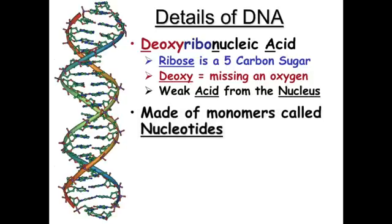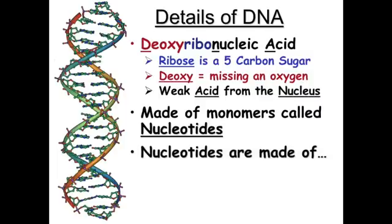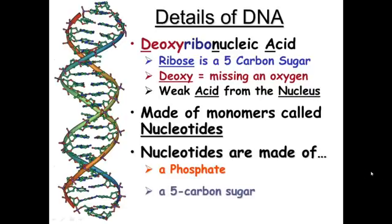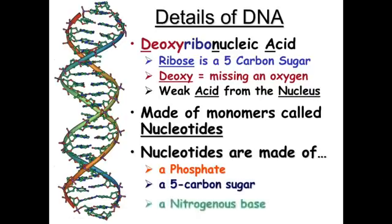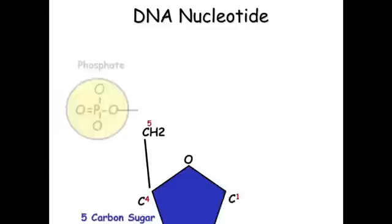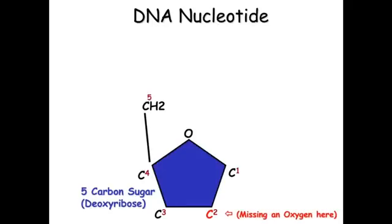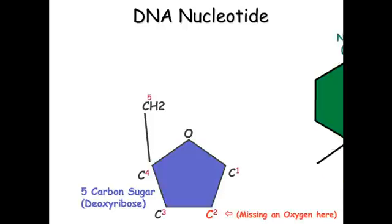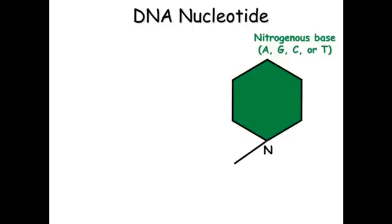DNA is made of monomers called nucleotides. A nucleotide has three parts: first, a phosphate — the same phosphates found in ATP and ADP — which forms the backbone or spiral of the double helix; second, a five-carbon sugar, which is deoxyribose, where the second carbon C2 is missing an oxygen; and third, a nitrogenous base, which is either A, G, C, or T.